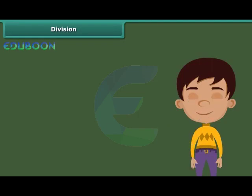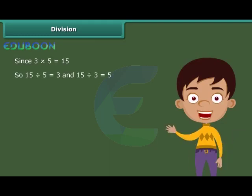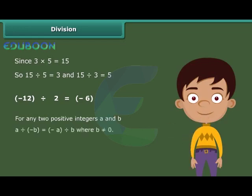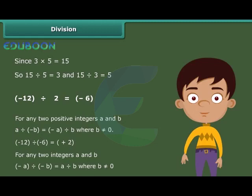We know that division is the inverse operation of multiplication. Since 3 into 5 equals 15, so 15 divided by 5 equals 3, and 15 divided by 3 equals 5. When we divide a negative integer by a positive integer, we divide them as whole numbers and then put a minus sign — giving a negative integer. In general, for any two positive integers a and b, a divided by minus b is equal to minus a divided by b, where b is not equal to 0. When we divide a negative integer by a negative integer, we first divide as whole numbers and then put a positive sign. In general, minus a divided by minus b is equal to a divided by b, where b is not equal to 0.